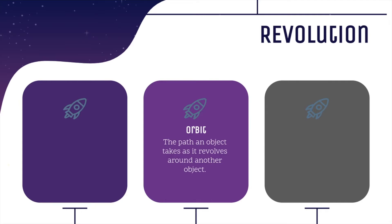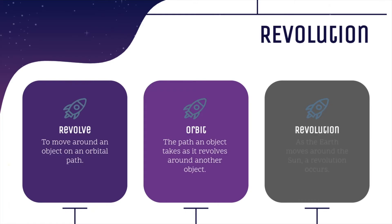Now let's talk about revolution. We've got rotation down, but what does revolution mean? We first have to learn some vocabulary words. The first one is orbit — that is the path an object takes as it revolves around another object. To move around an object on an orbital path is called revolving around that object. As the Earth moves around the Sun, a revolution occurs.